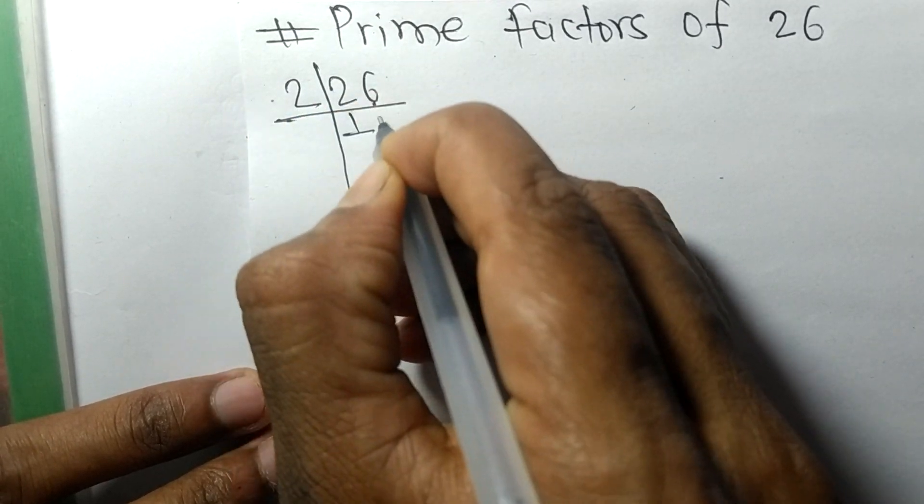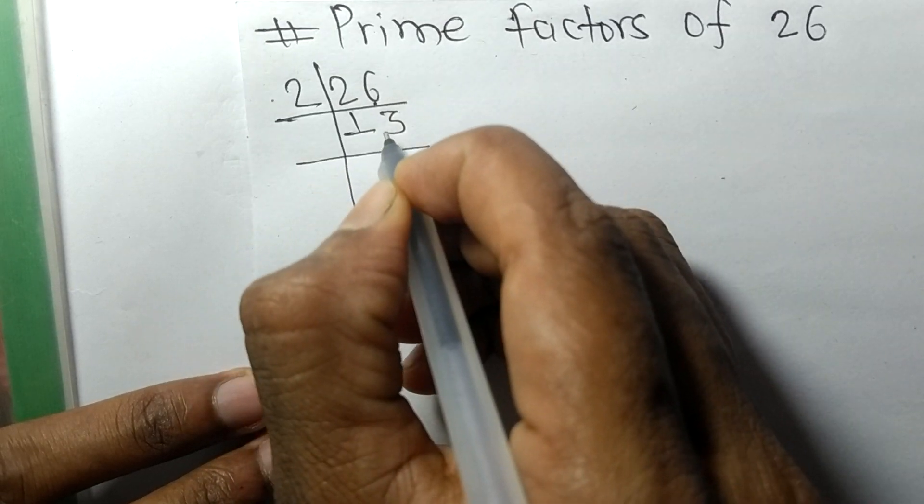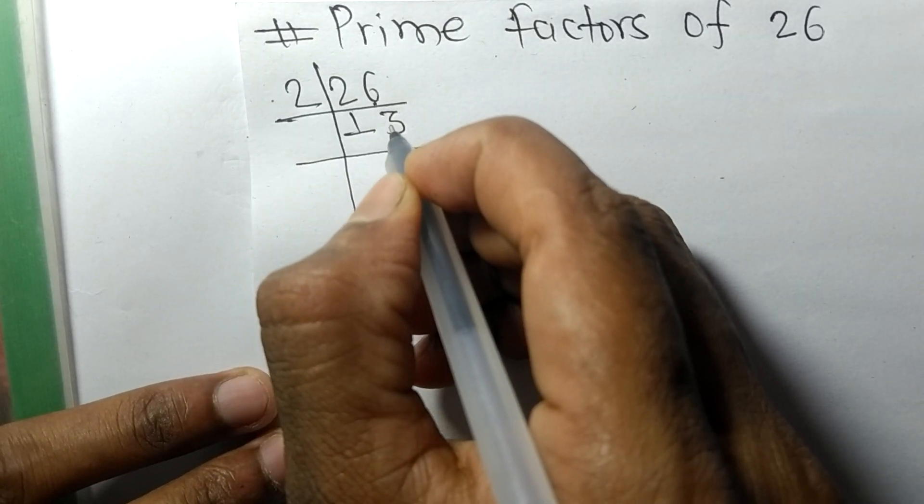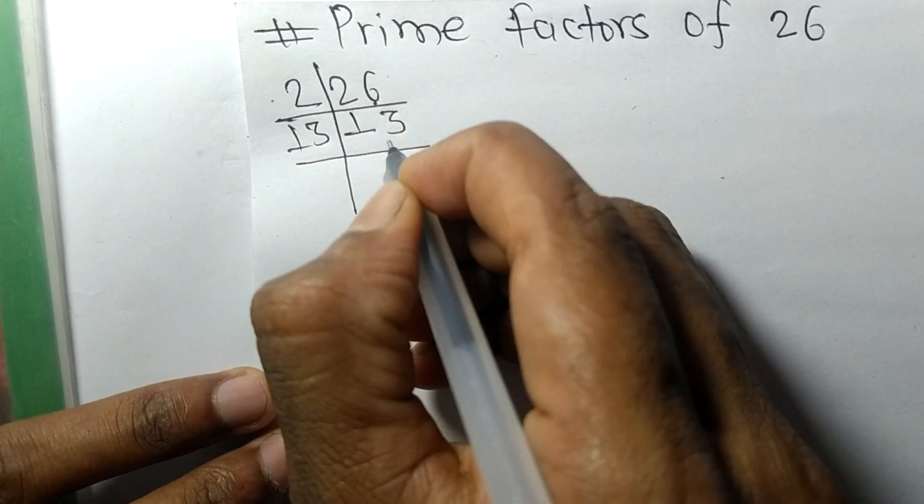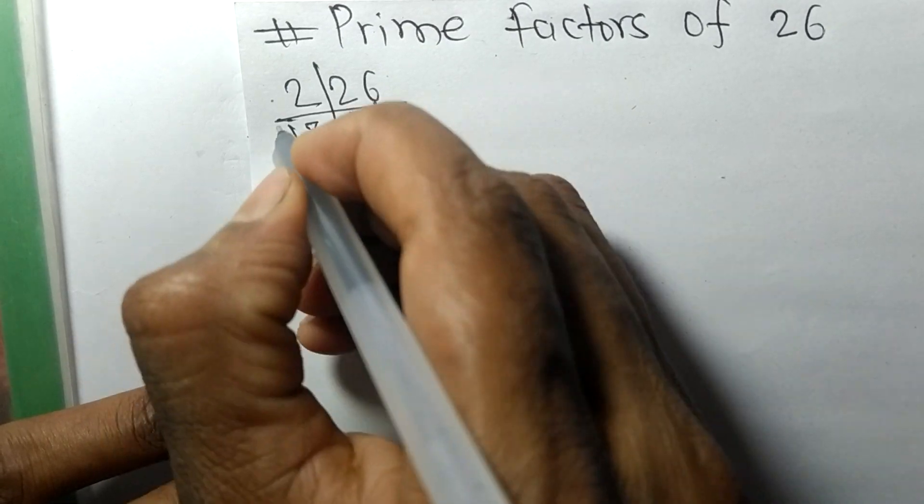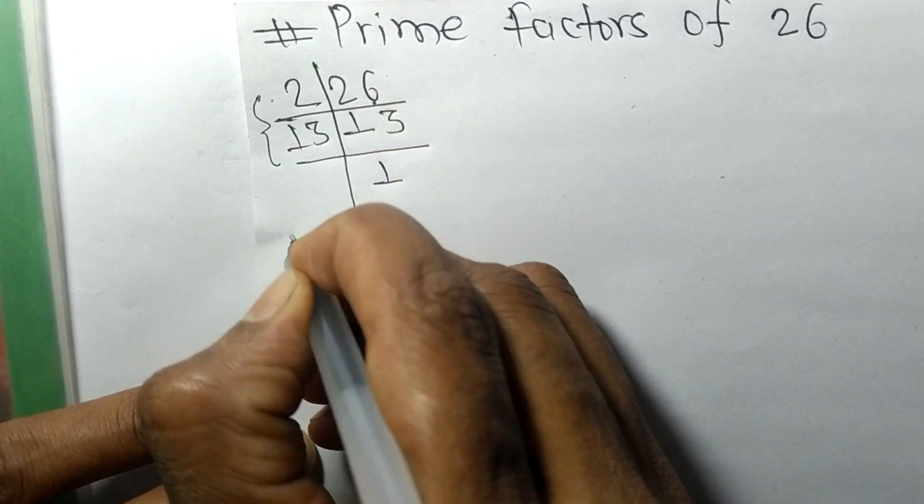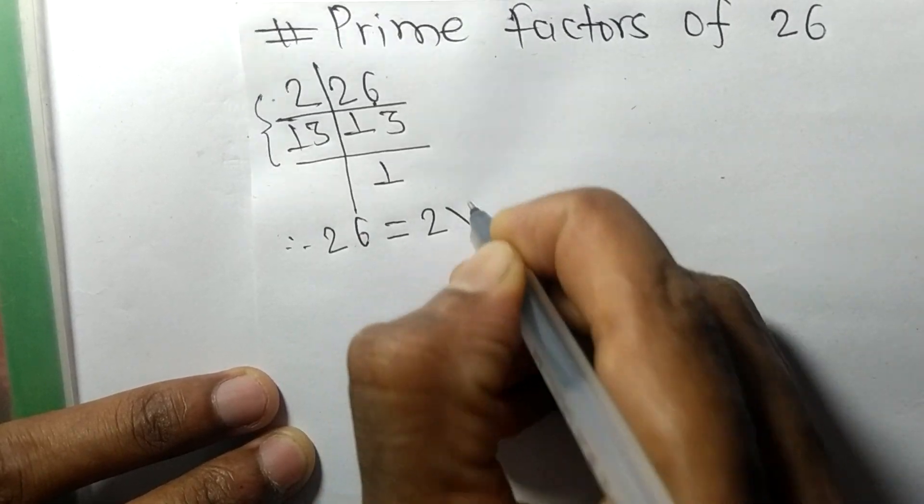Now 13 is itself divisible by 13, so 13 divided by 13 gives 1. From this we can write 26 equals 2 times 13.